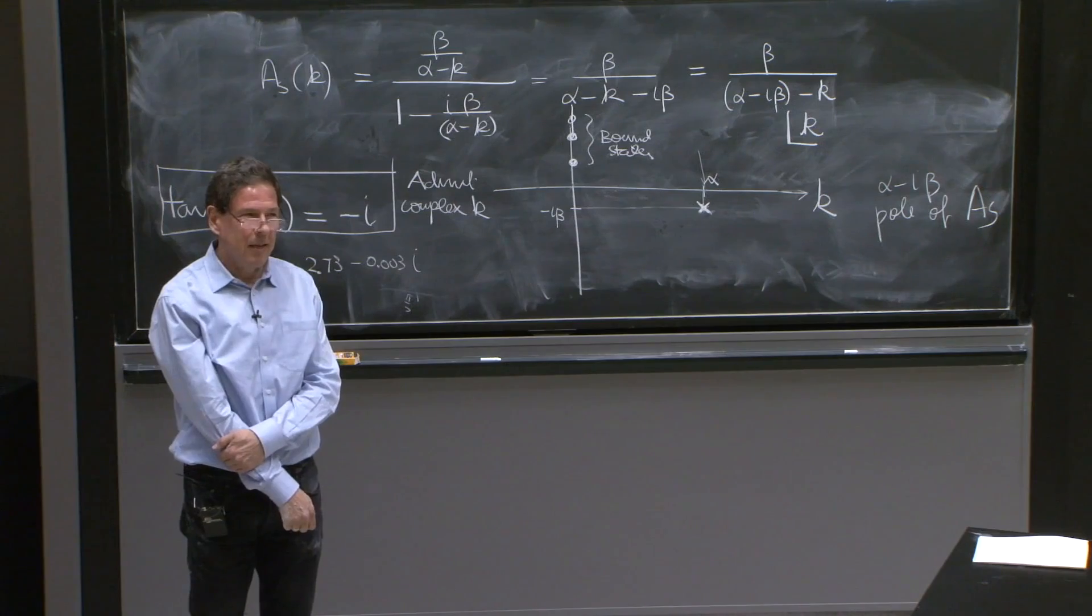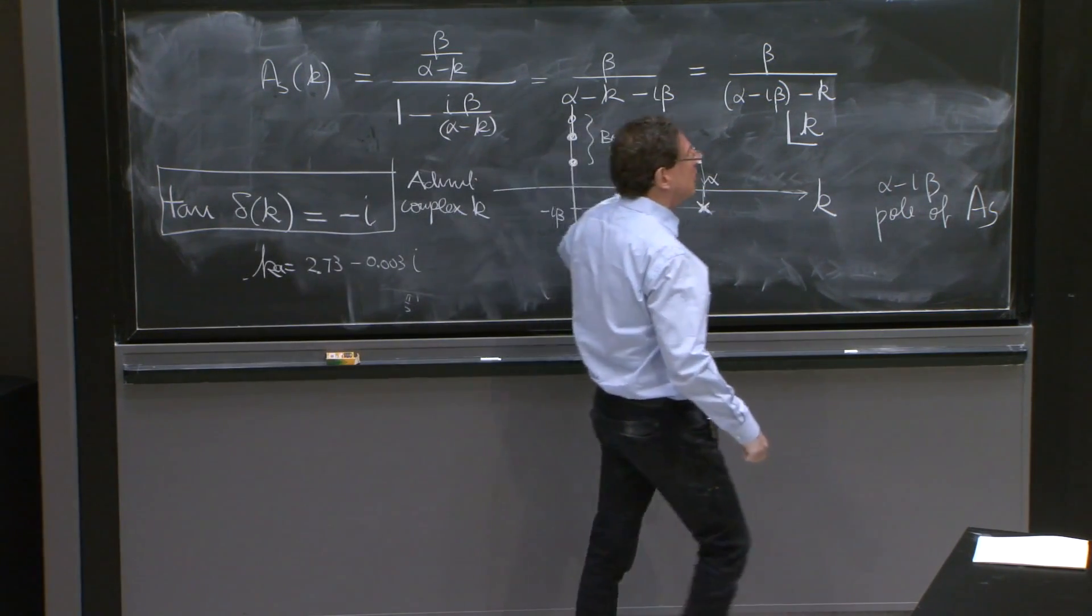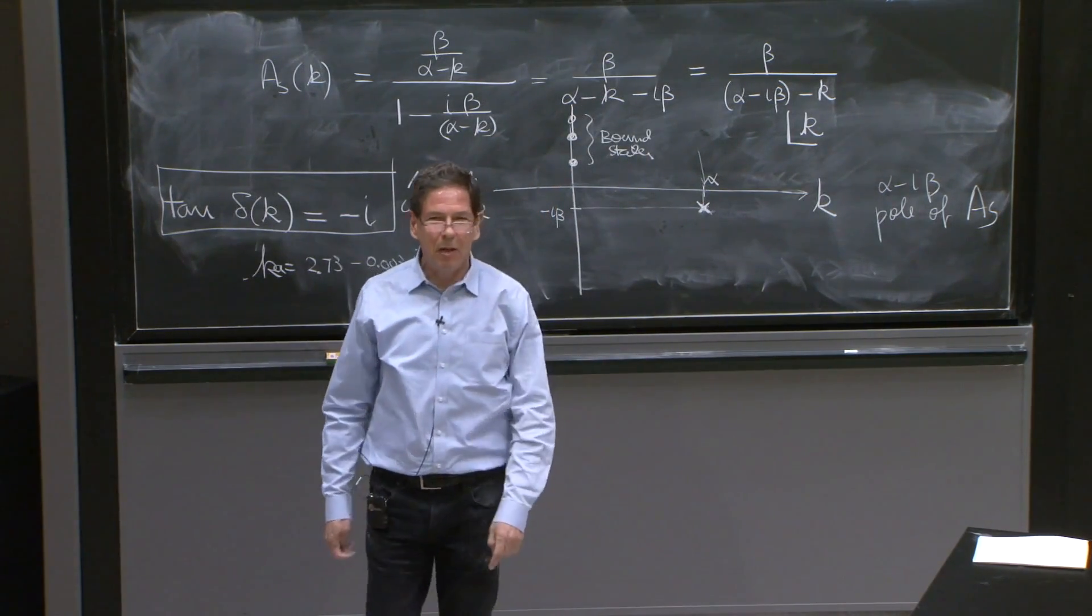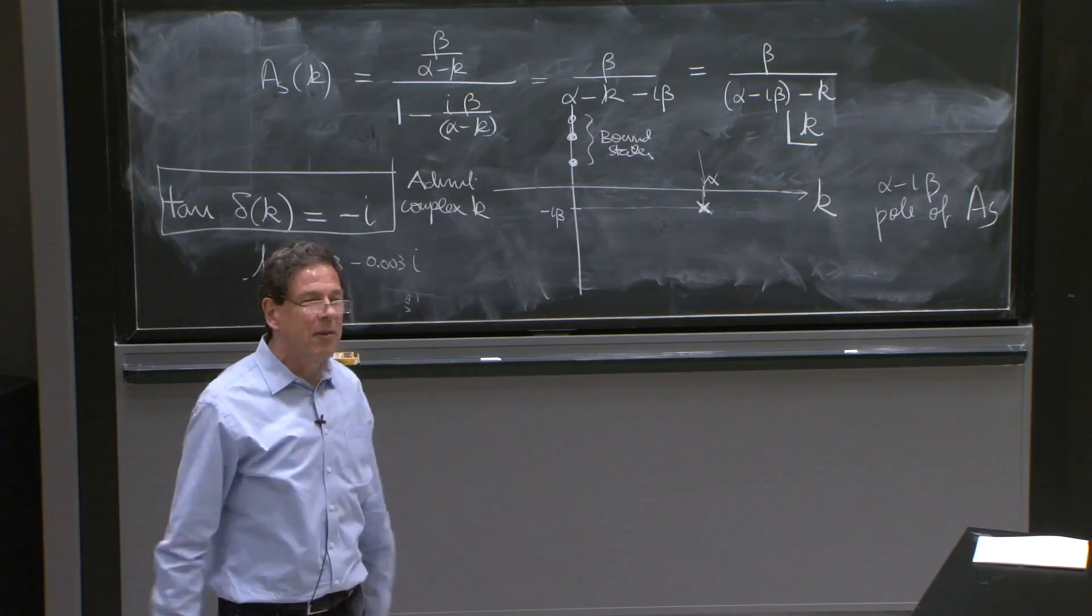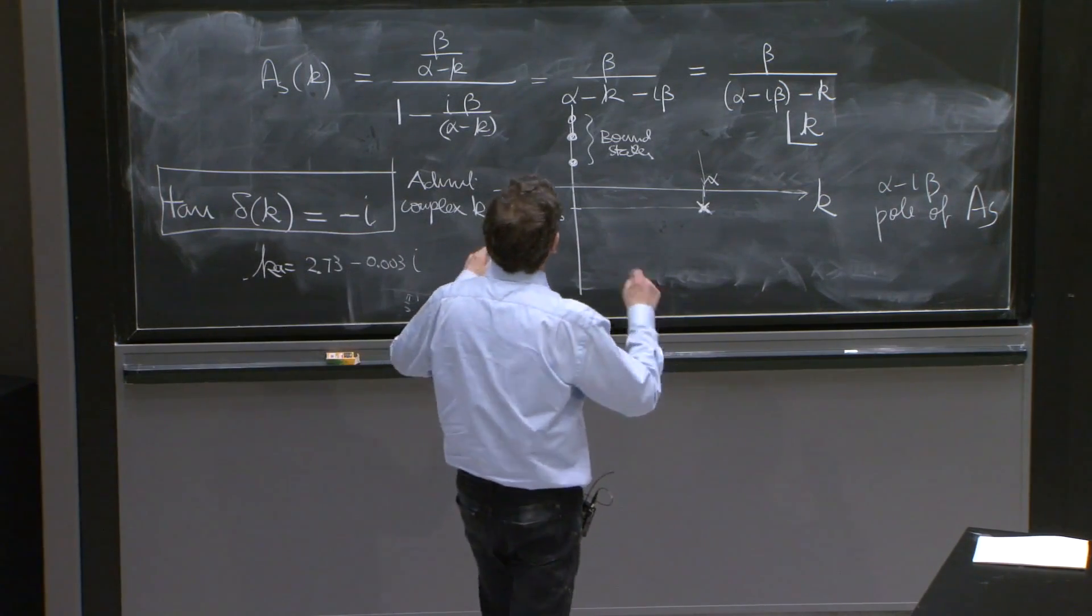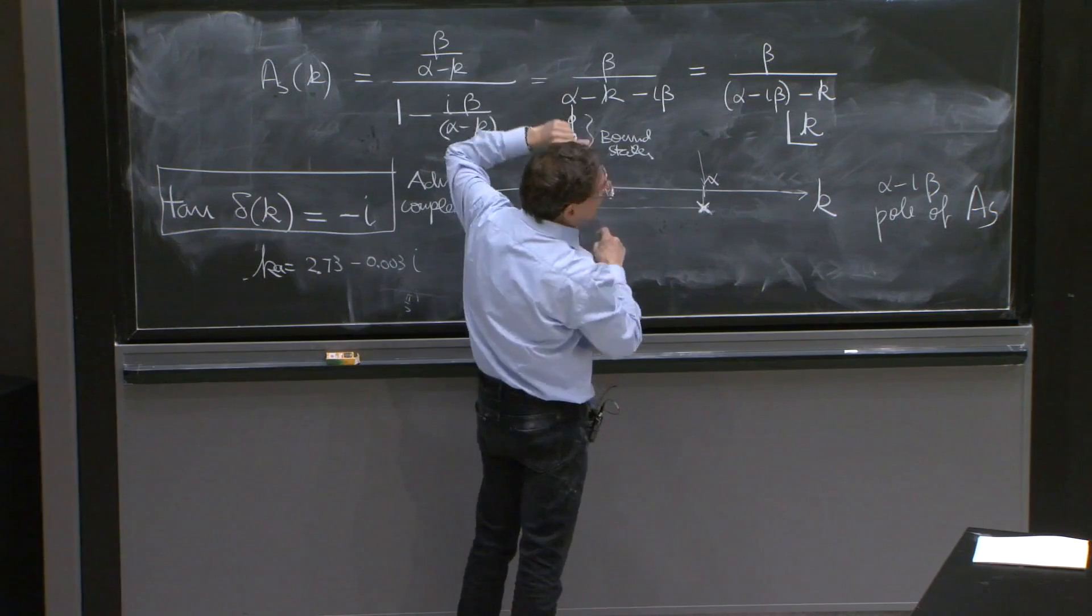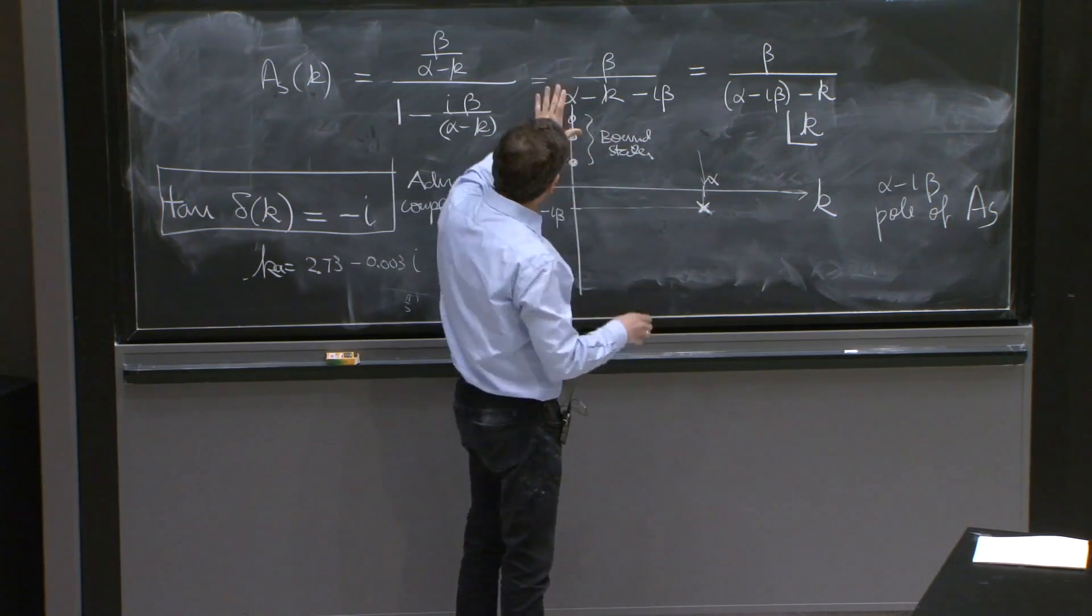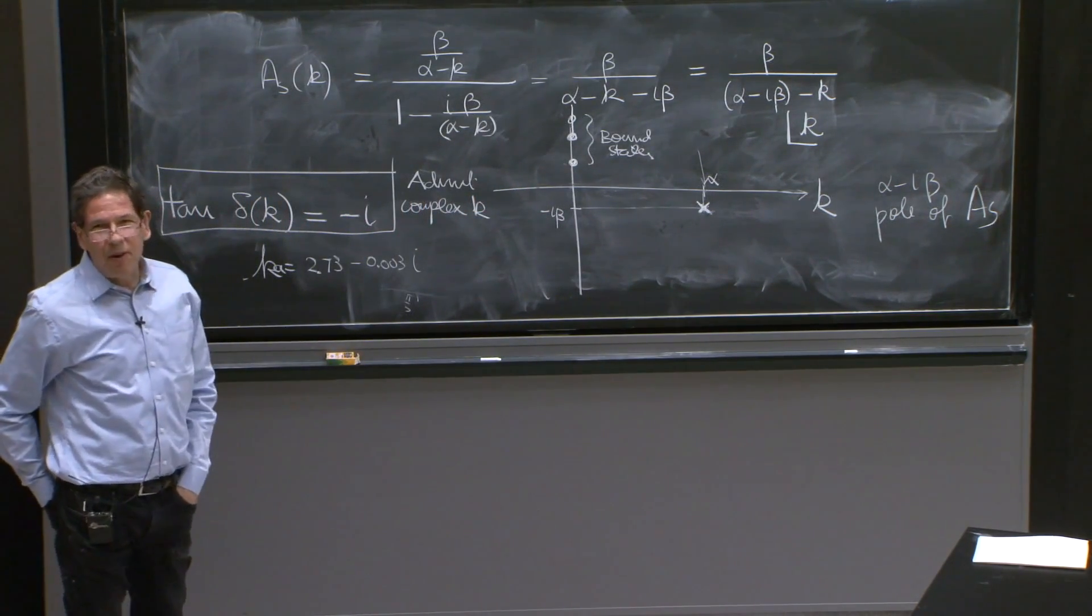I have not proven for you that bound states correspond to poles. But it's a simple calculation. And that I will assign it to you with a little bit of guidance. And you will see that also, for the case of bound states, you get a pole in the scattering amplitude. And that will complete the interpretation of that.